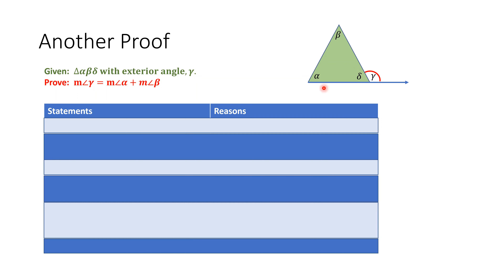What we're asked to prove is that the measure of this exterior angle, angle gamma, is equal to the sum of the measures of angle alpha and angle beta. I want you to pay close attention to the relationship of the exterior angle gamma to these other angles, alpha and beta.